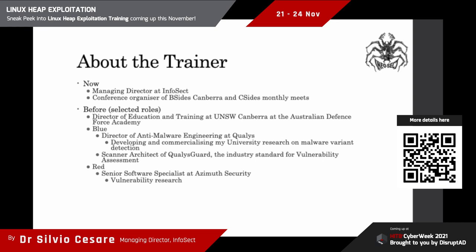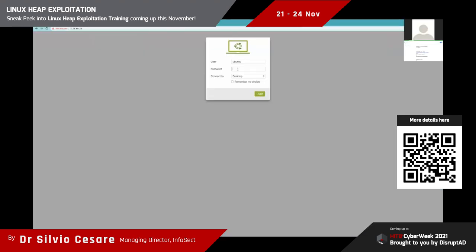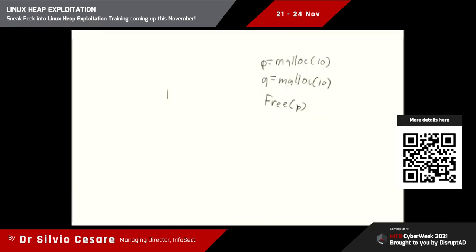I've also worked on the red side. I was a Senior Software Specialist at Azimuth Security, doing vulnerability research. Online training at InfoSect has been very well received. We've been doing it for more than a year now. We have a good lab environment using Amazon instances — you basically get a desktop environment through the browser. In face-to-face training, using a whiteboard is a very important process of showing how certain things are laid out in memory, and we replicate that experience using a tablet that we can interactively draw on.